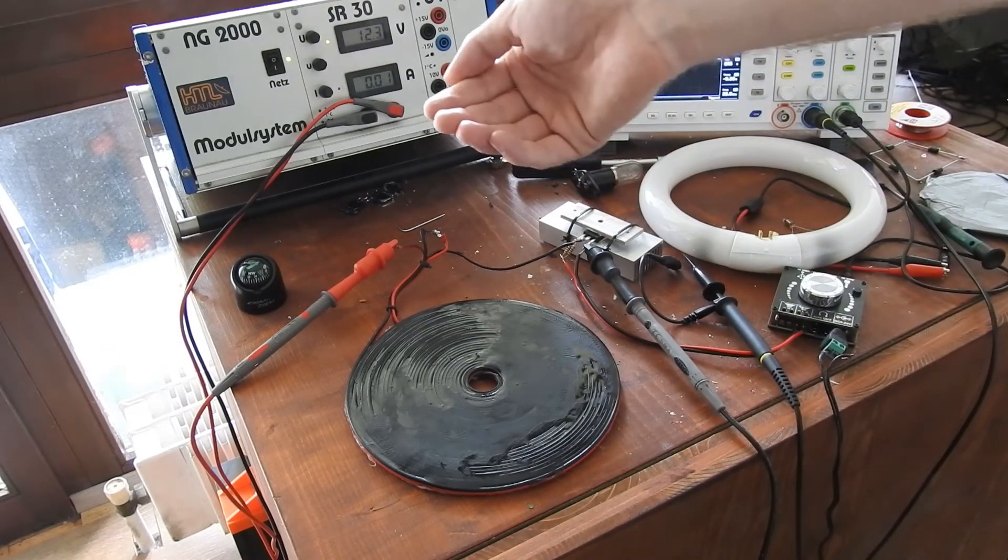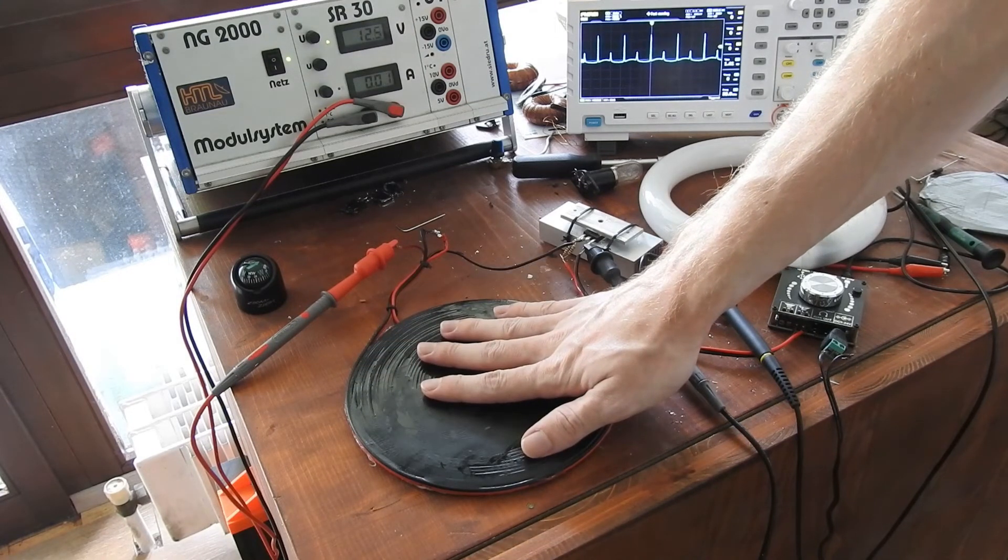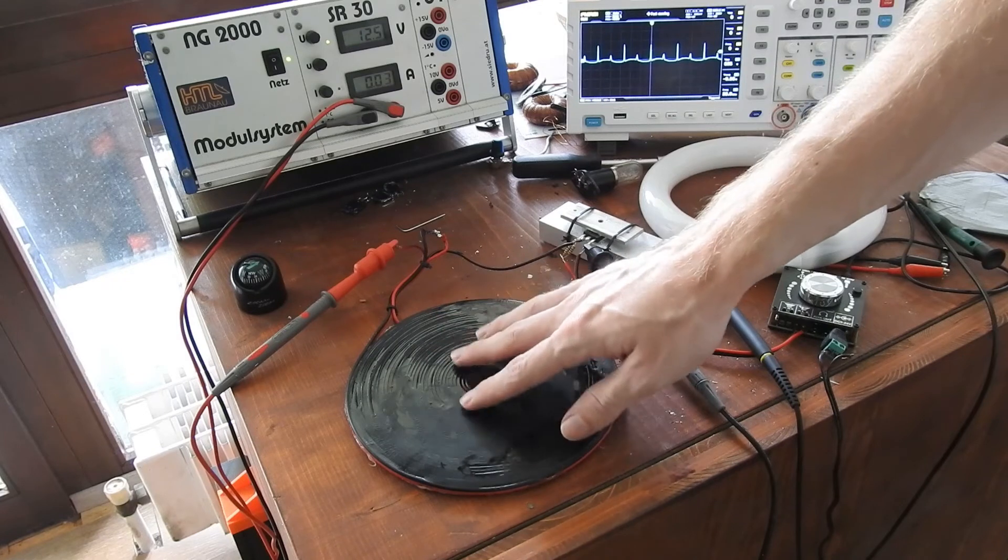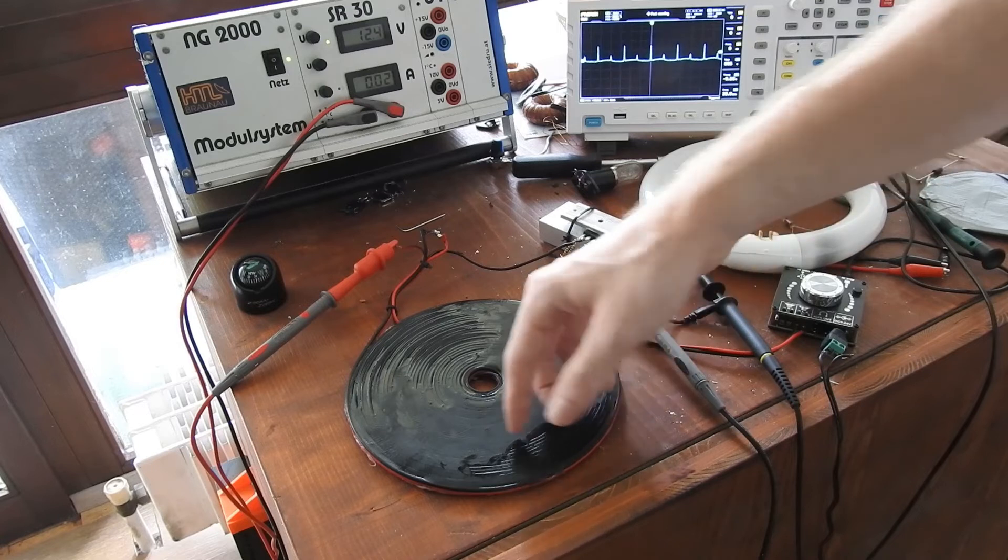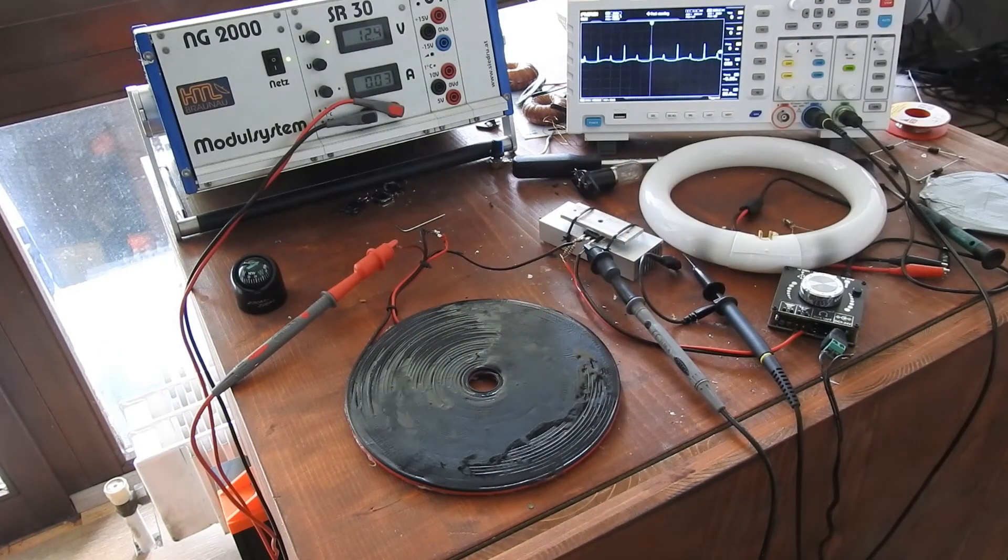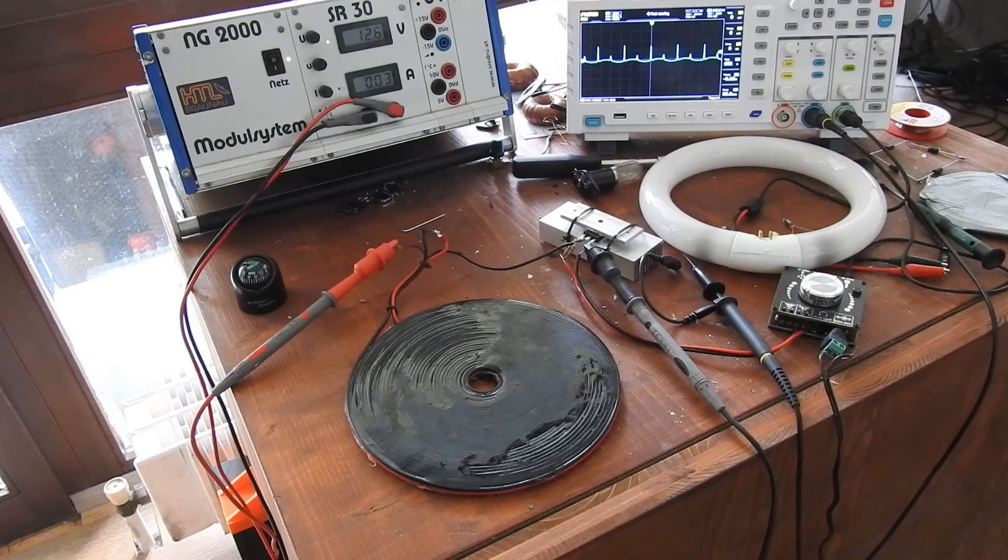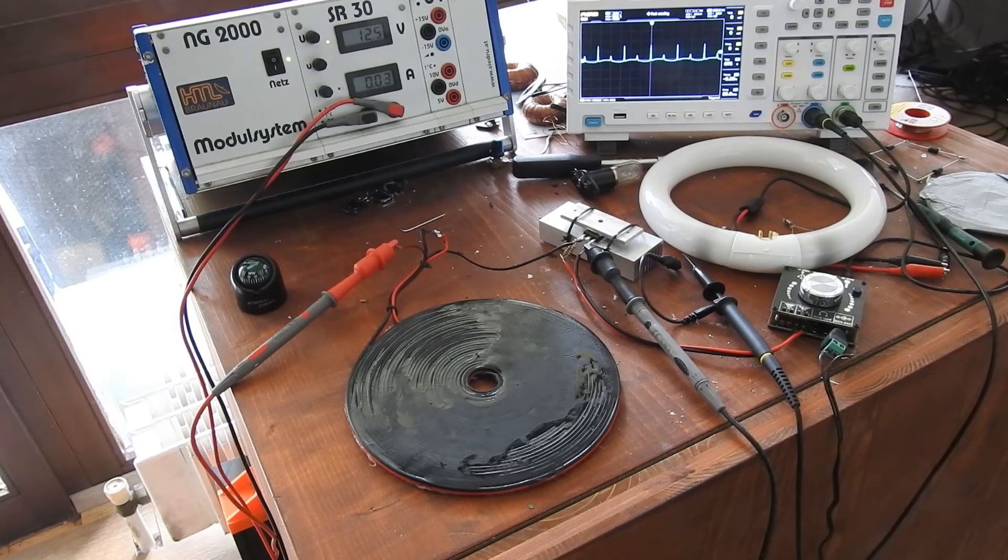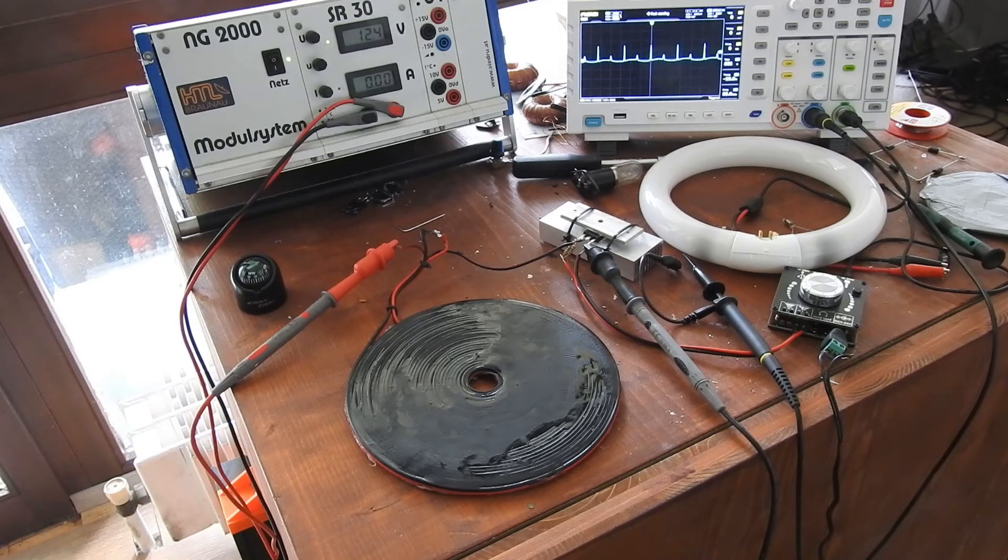And if we attach another bifilar coil to the system we can use these high voltage impulses to drive any kind of load. And this would basically be a high voltage transformer that operates at its resonance frequency and has almost zero losses when doing so. So I will just connect two other bifilar coils to the system and show you what I mean with this.